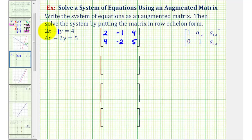Notice how the coefficients of x gave us the first column, the coefficients of y gave us the second column, and the constants gave us the third column. Also notice the linear equations had to be in standard form in order to write the augmented matrix.